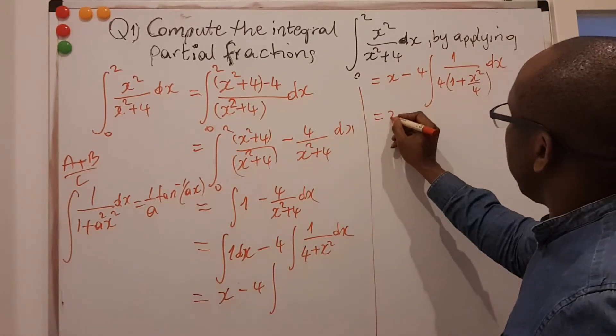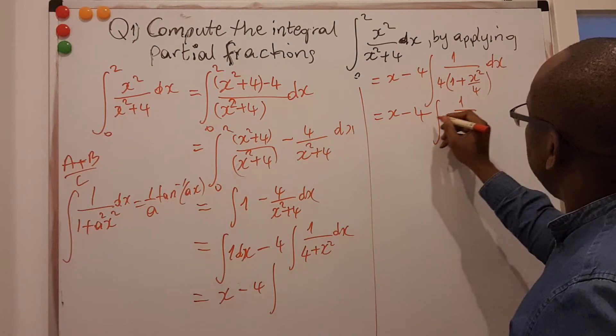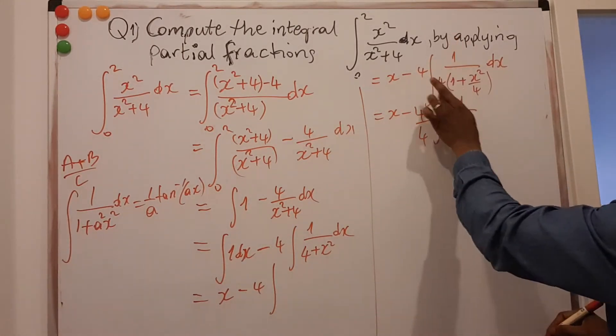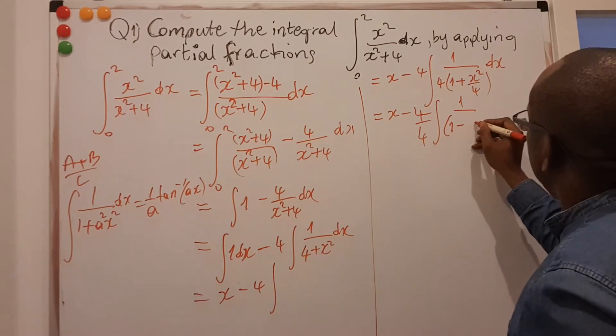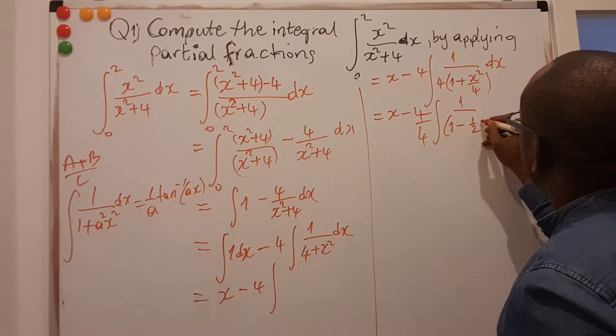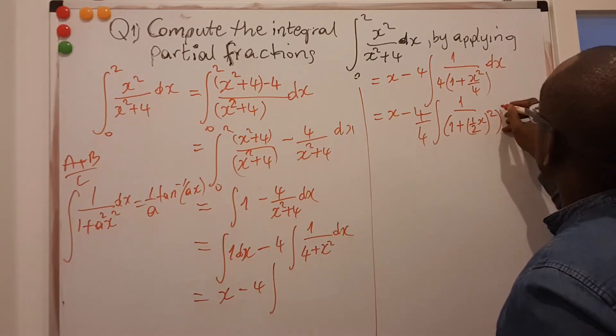So I can write this as x minus 4 integral of 1. I can just take this 4 outside here into 1 plus x over 2 all that squared dx.